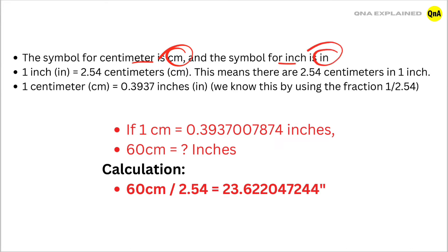1 inch equal to 2.54 cm, this means there are 2.54 cm in 1 inch. 1 cm equal to 0.3937 inches, we know this by using the fraction 1 upon 2.54.